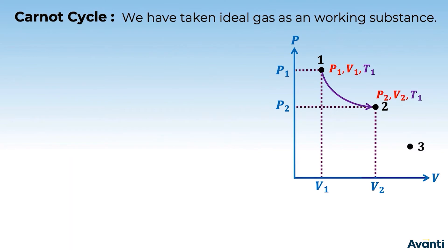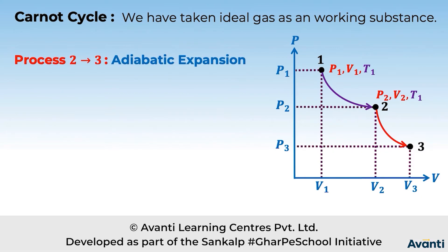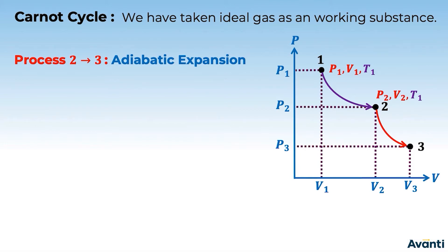After this, the system moves from state 2 to state 3, where pressure is P3 and volume is V3. The process from 2 to 3 is an adiabatic expansion. So in the Carnot cycle, the first process is isothermal expansion and the second process is adiabatic expansion.